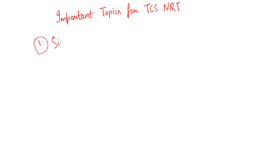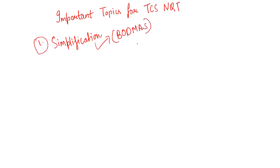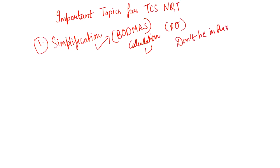The first topic is Simplification. In TCS NQT you will get around five to six questions from simplification only. For this topic you don't have to revise any formula or trick — nothing is needed. Just a simple BODMAS rule, that's it, along with some calculation. If calculation is your strength, simplification is all yours. They are not going to ask PO-level simplification; it will be simple. Just make sure that you are not in a hurry, because even easy questions can go wrong when you rush.